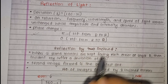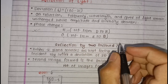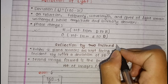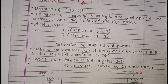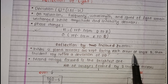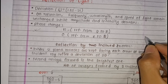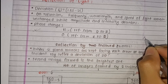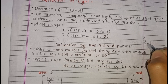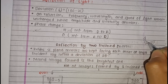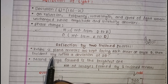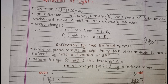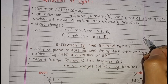Reflection by 2 inclined mirrors. When 2 plane mirrors are kept facing each other at an angle theta, the incident ray undergoes a net deviation of 2 theta.